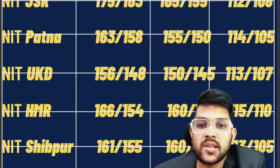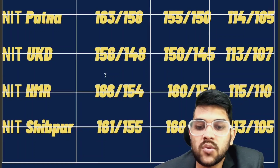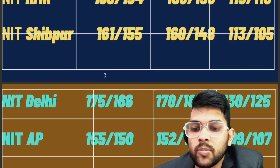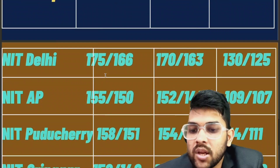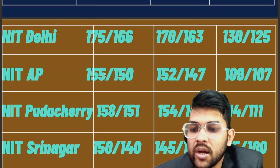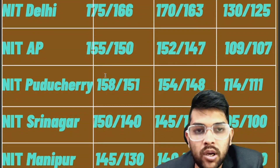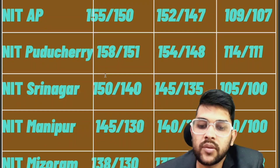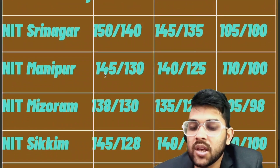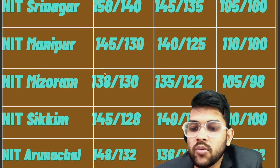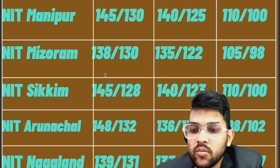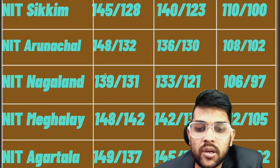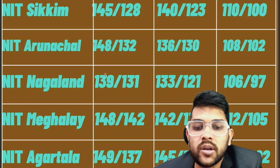For NIT Sipur, 161 and 160, lowest 130. For NIT Delhi, 175 and 170, lowest 130. For NIT Andhra Pradesh, 155 and 152, lowest 109. For NIT Pondicherry, 158 and 154, lowest 114. For NIT Srinagar, 150 and 145, lowest 105. For NIT Manipur, 145 and 140, lowest 110. For NIT Arunachal, 148 and 136, lowest 108. For NIT Nagaland, 139 and 133, lowest 106. For NIT Meghalaya, 148 and 142, lowest 112. For NIT Agartala, 149 and 145, lowest 107.